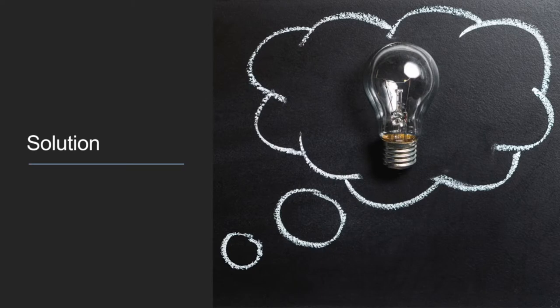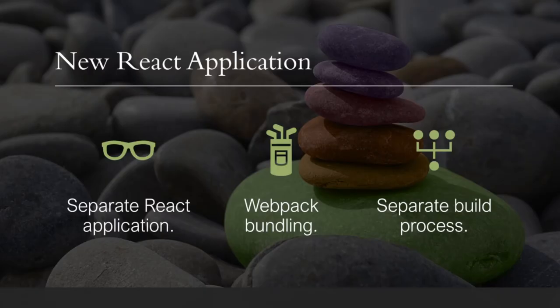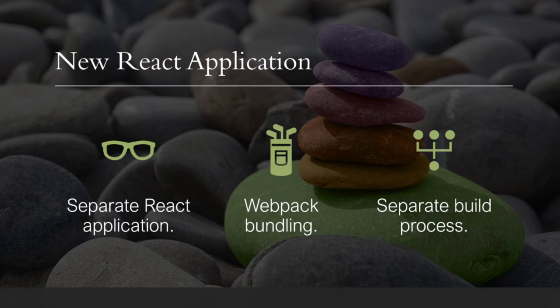Now let's talk about the solution we are proposing. First, you need to create a separate React application working in a separate zone. Second is Webpack building — the advantage is that you can do code splitting and manage your assets, for example doing base64 for small images or loading from a CDN for heavier ones. Third is a separate build process so that we are not dependent on the existing build process and can do whatever we want with our React application.